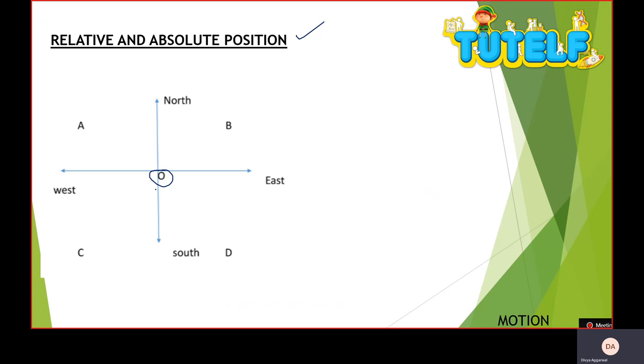All my absolute positions are given in respect to this point O. If I say what is A's position in respect to B, then this will be my relative position. And position will be either left or west. I will say that in respect of C, either north or up. But absolute position point A will be north-west. So if I ask you, which point is in south-east direction? You can easily say D point.